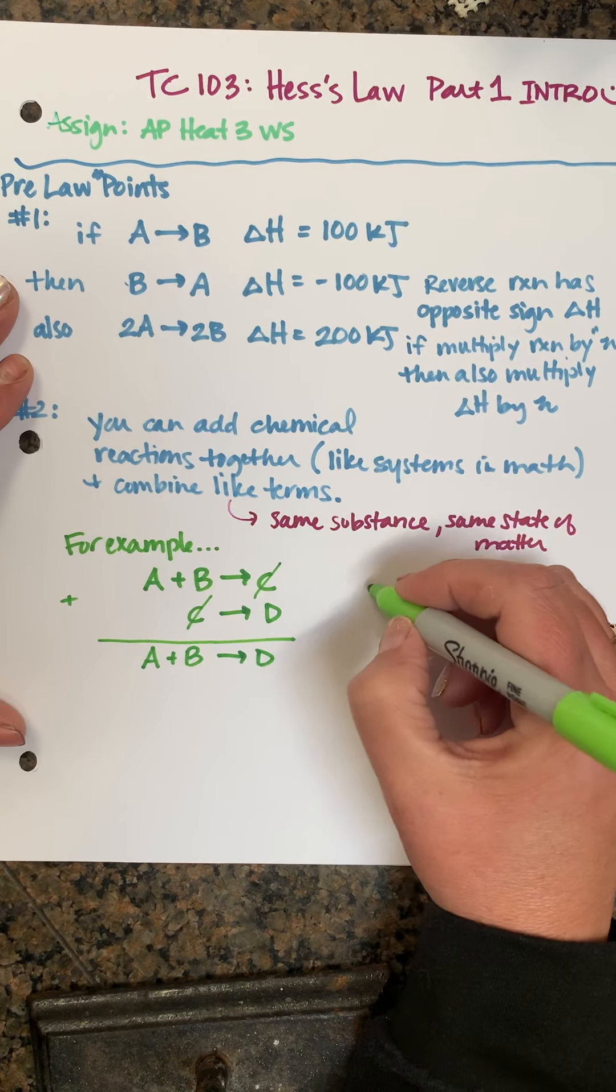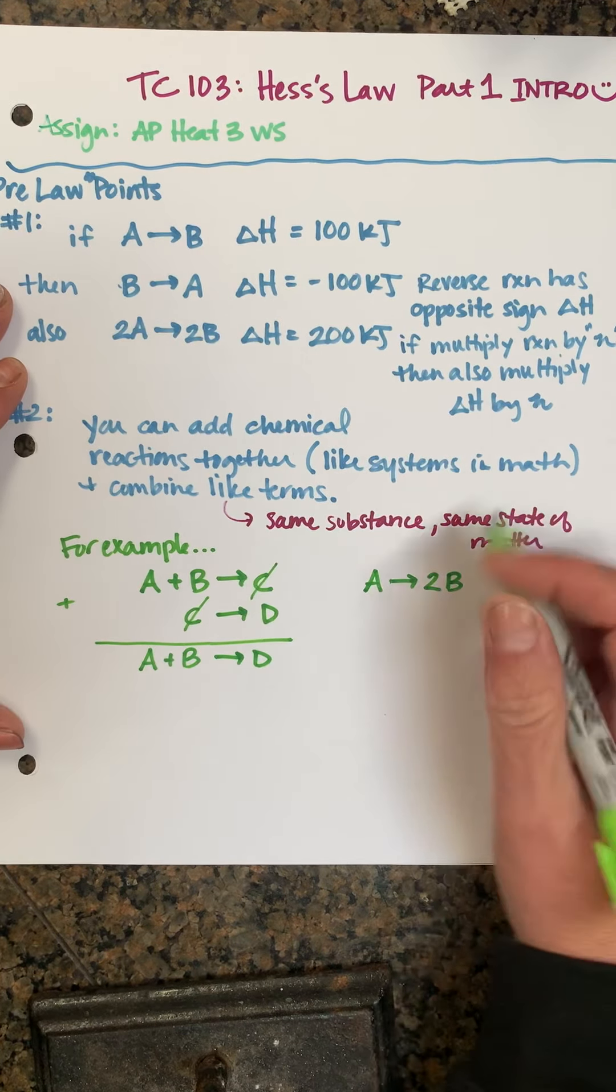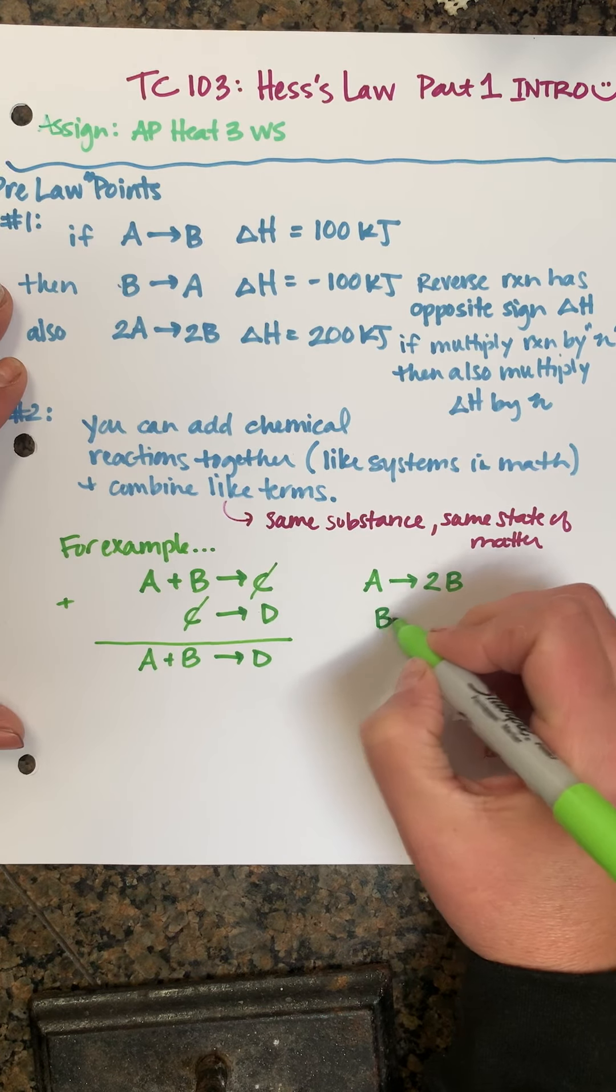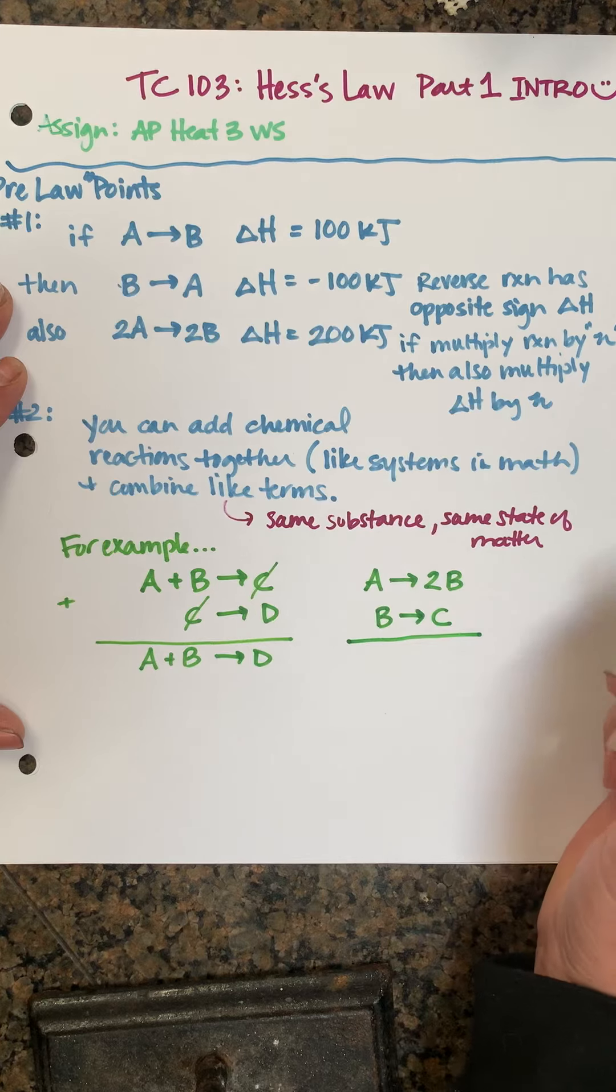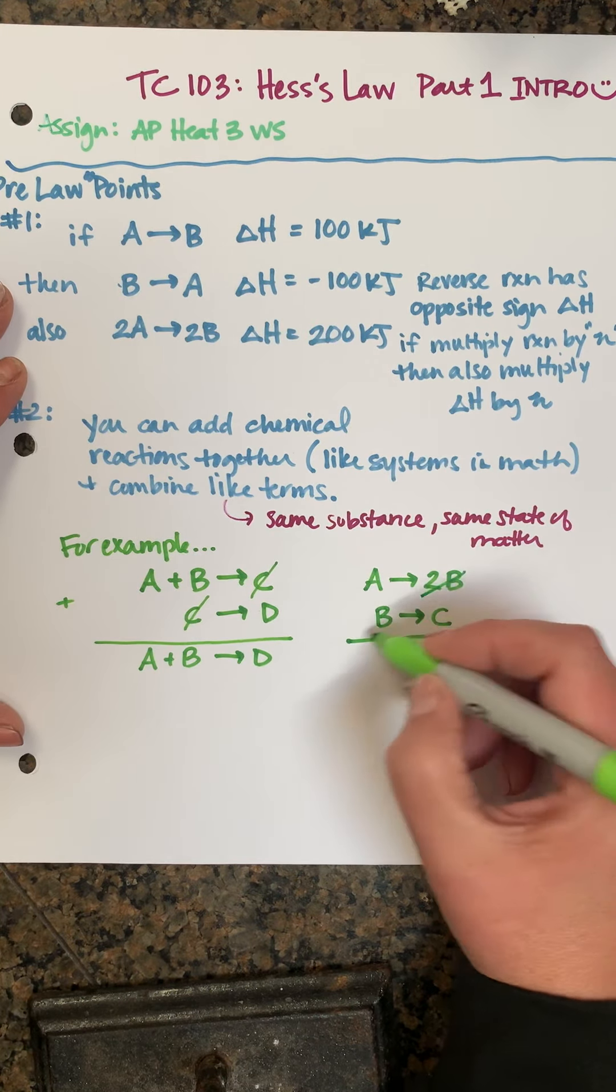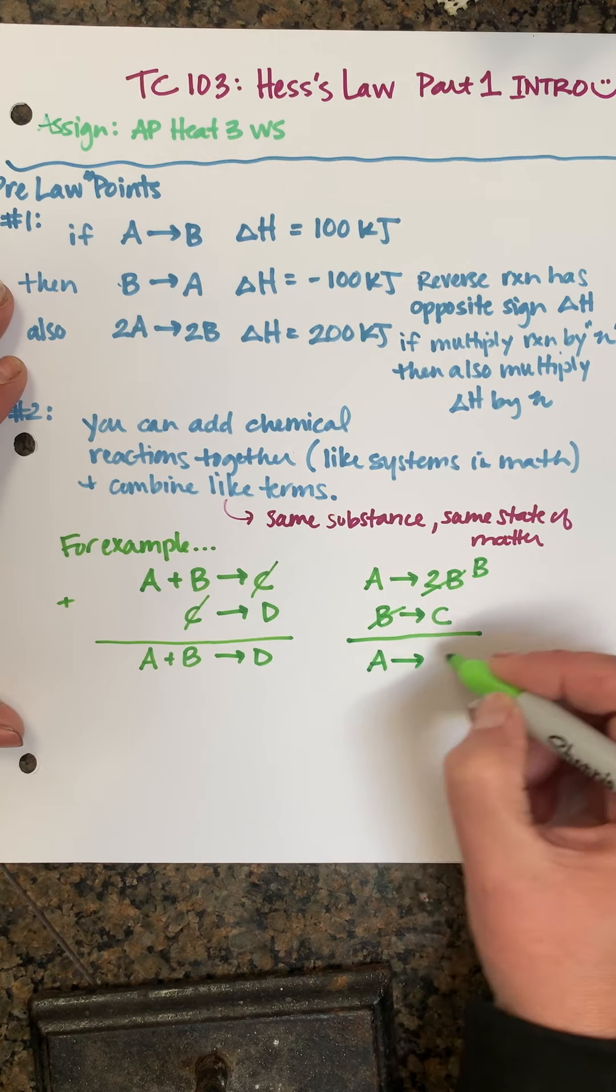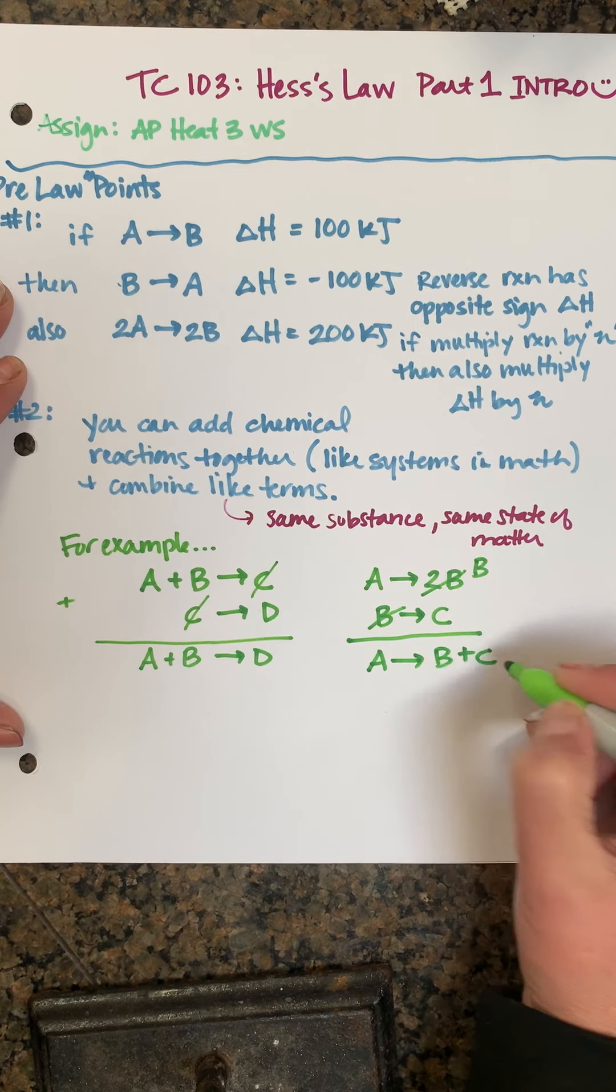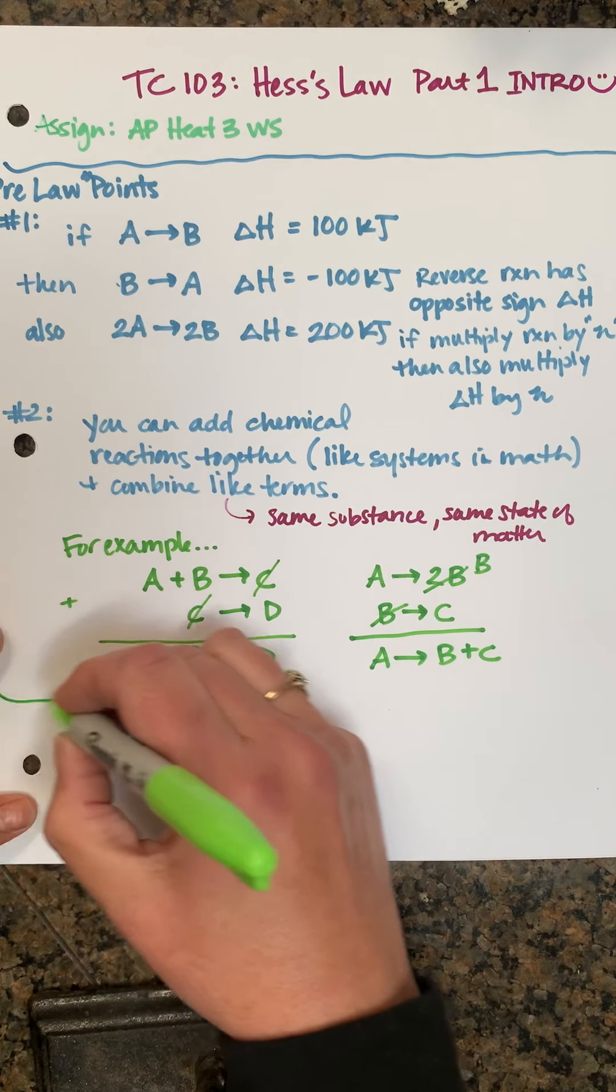You could also say if you had A making 2B adding together with B making C. Because they're on opposite sides of the arrow, we could cancel one of those B's and so we would end up with A making B plus C.